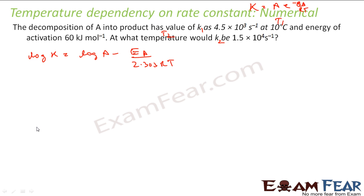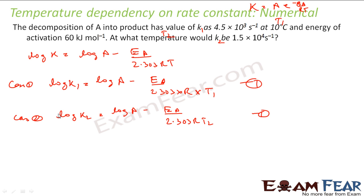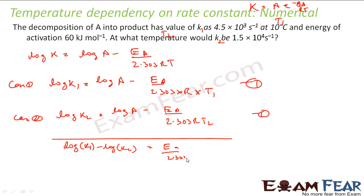We write equation 1 for case 1: log K1 equals log A minus Ea by 2.303 R T1. And equation 2 for case 2: log K2 equals log A minus Ea by 2.303 R T2. Subtract equation 1 from equation 2 — log A cancels. You get log K1 minus log K2 equals Ea by 2.303 R, multiplied by the quantity 1 by T2 minus 1 by T1. This is the two-temperature Arrhenius equation.